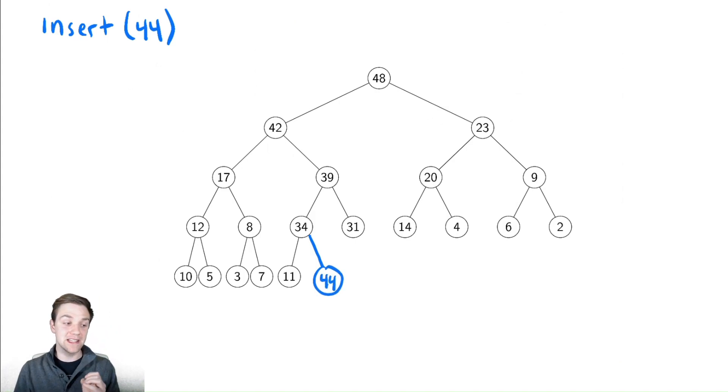However, this now violates my max heap property that we talked about in our first video, which is that 44 is bigger than 34, but it's its child. So let's fix that. How can we fix that? Why not just swap it? Put 34 down here and 44 up there.